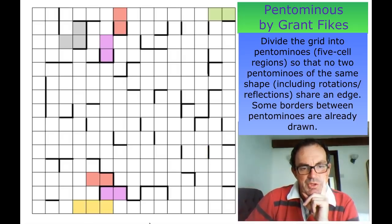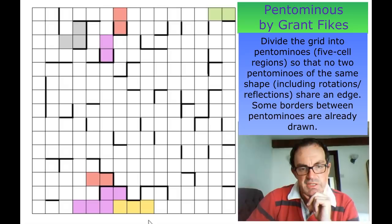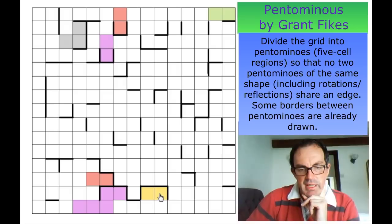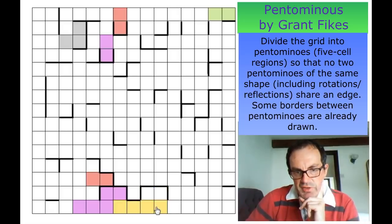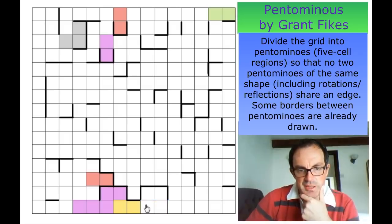One option would be an N pentomino like that, but you can see that breaks — now how do we fill in this white space? These three squares have to be part of the same pentomino, and this domino can't be isolated; it's got to be connected somehow. So the only option is to put in another N pentomino.